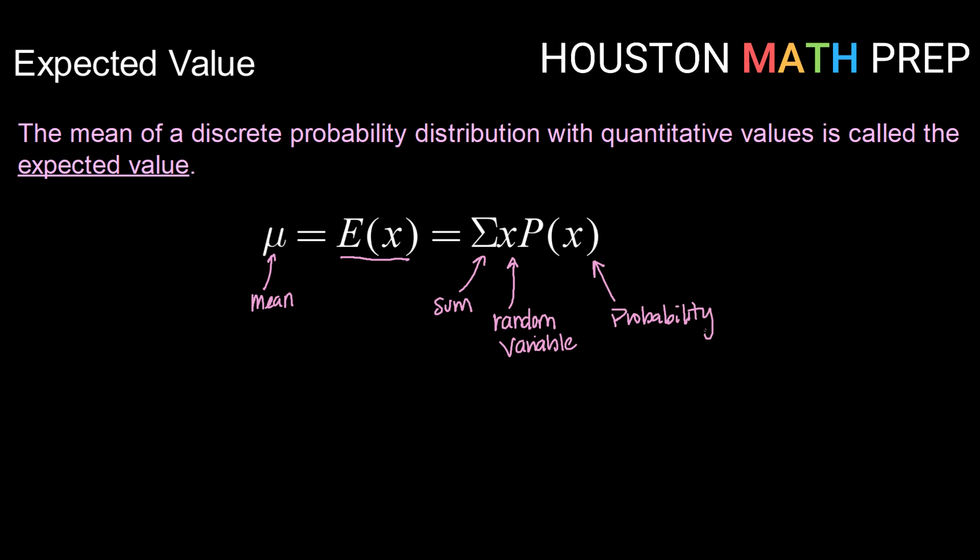We'll take each random variable in the distribution, multiply it by its probability, and then add up all of those values. Let's take a look at an example of that.